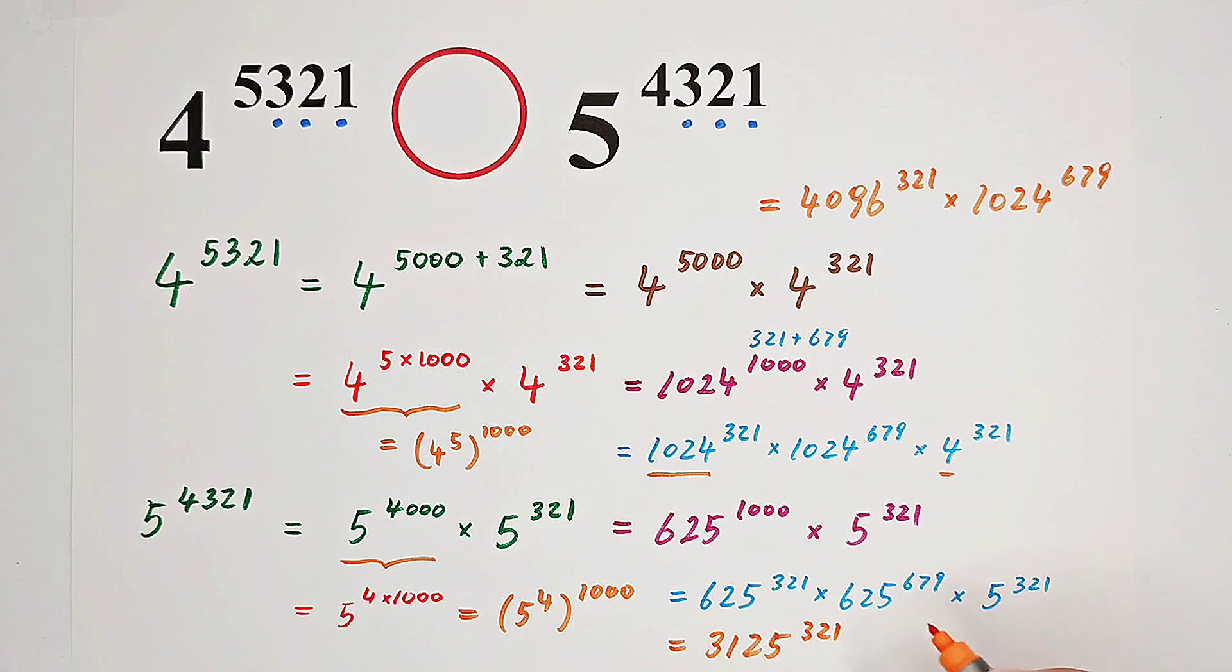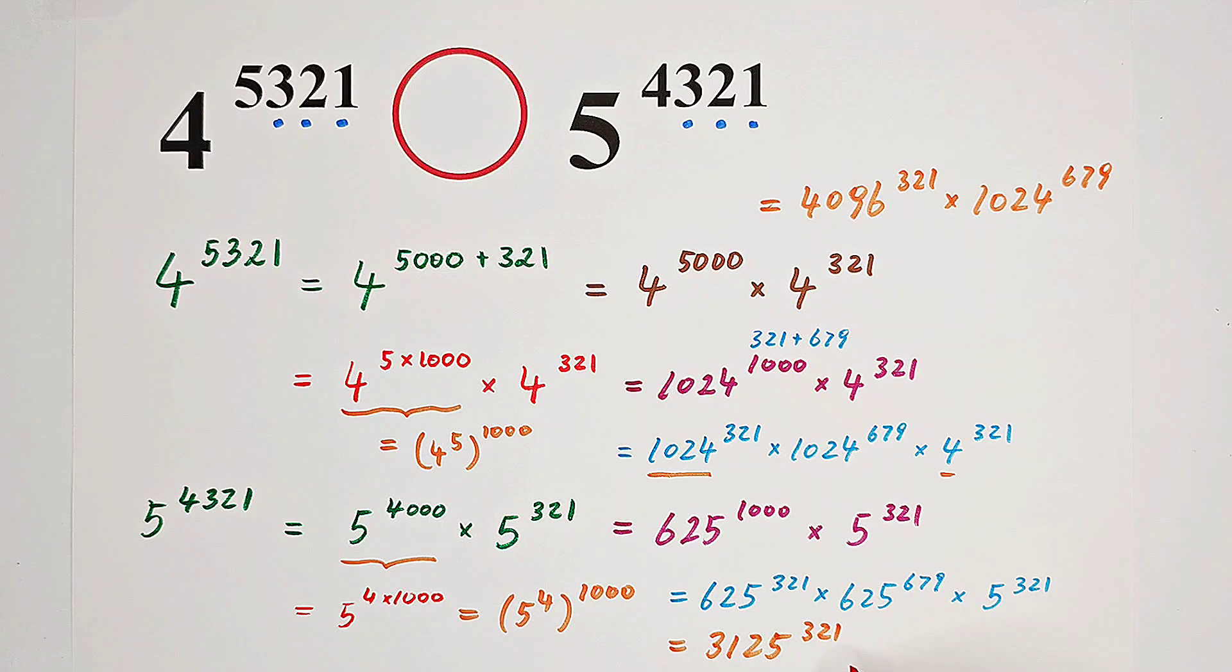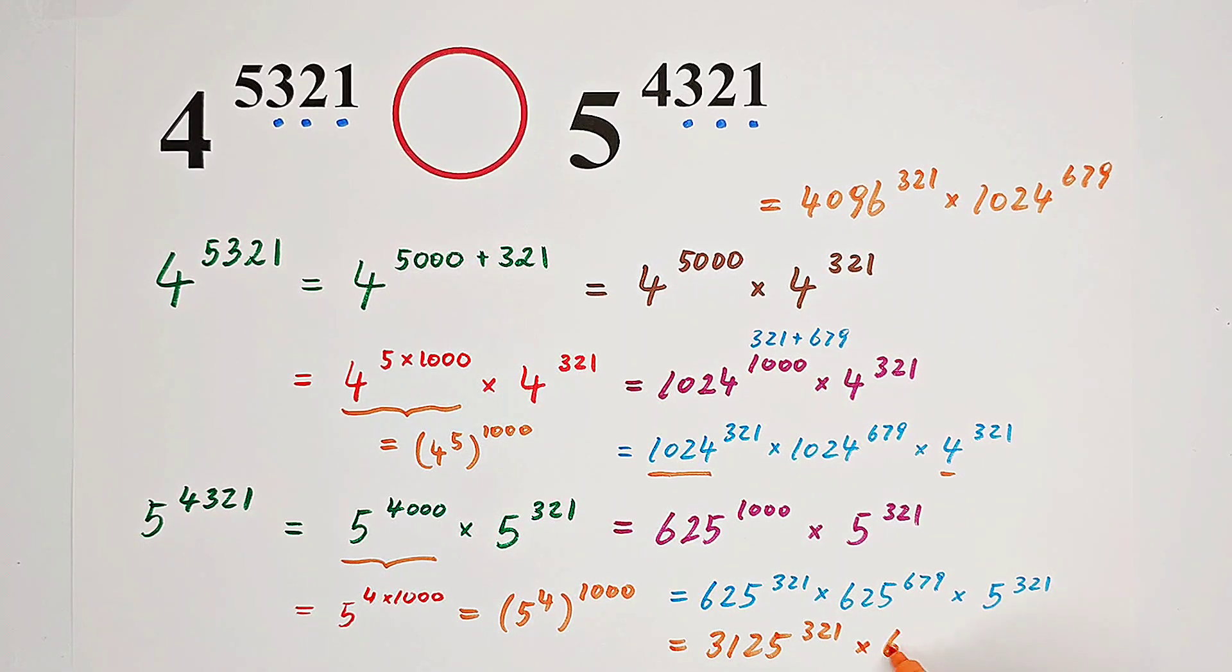Because they have the same exponent, so we can just multiply the basis together. And the new exponent is the exponent. Then times 625 to the power of 679. And now you can see 321, 321, 679, 679.